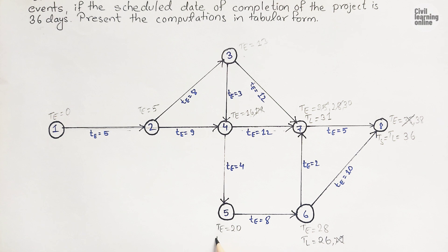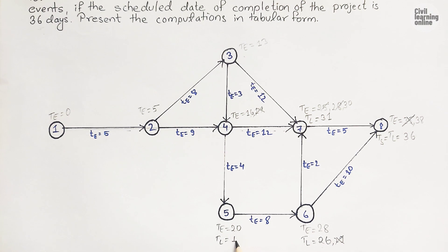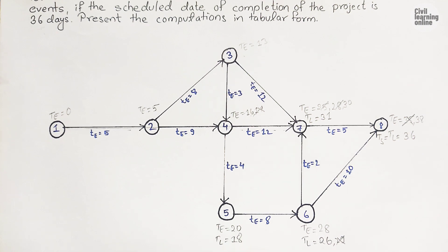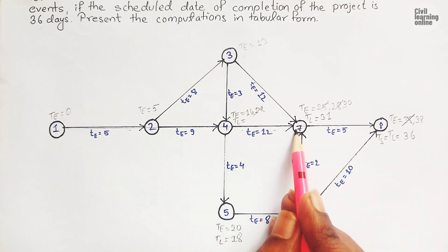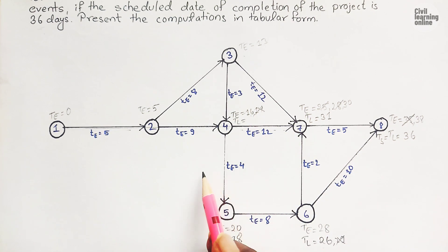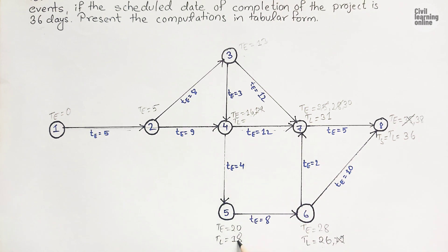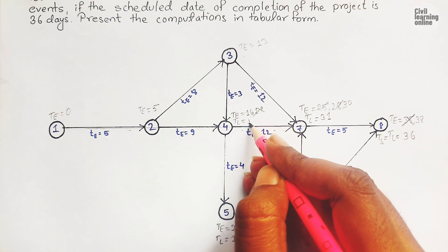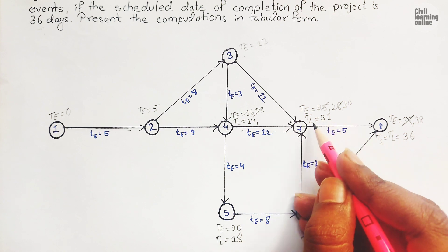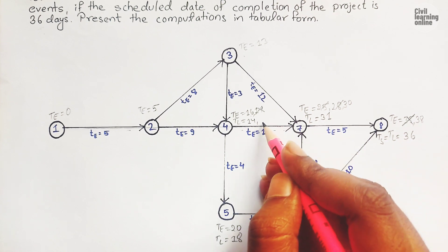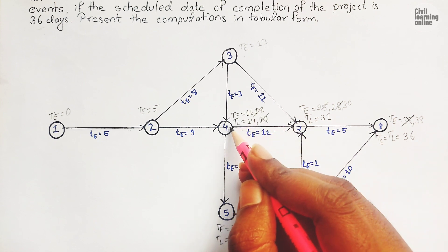TL of event five: twenty-six minus eight is eighteen. TL of event four: event four has two successors, events seven and five. Eighteen minus four is fourteen, and thirty-one minus two is nineteen. Minimum of these two is fourteen, so TL of event four is fourteen.